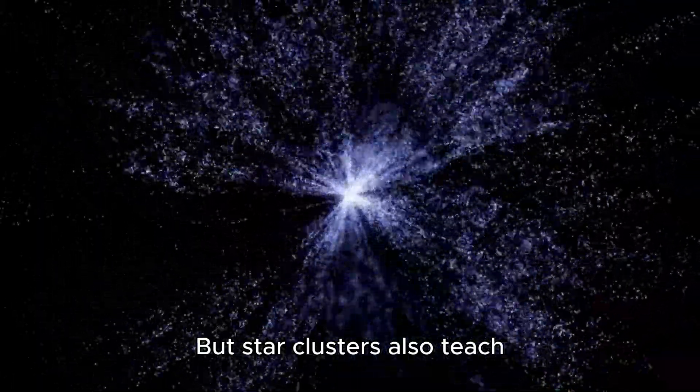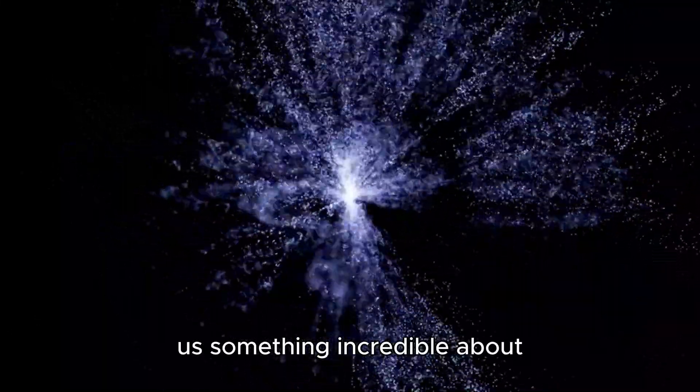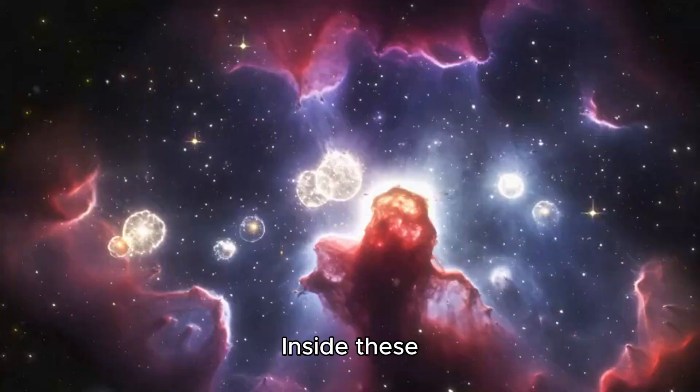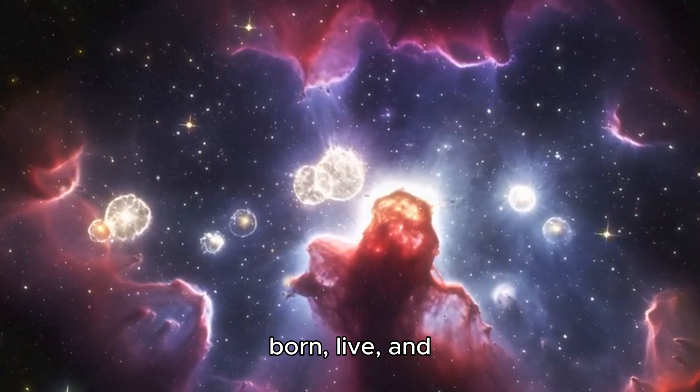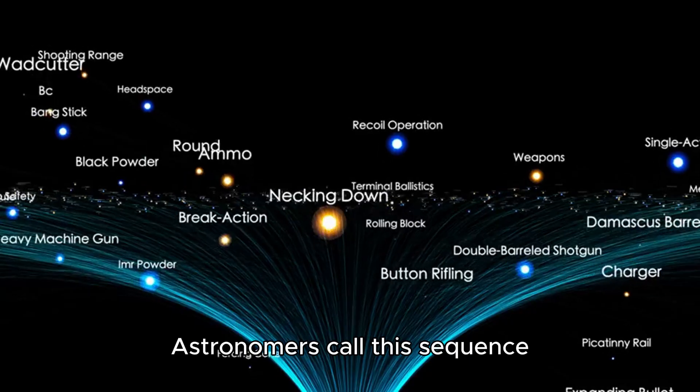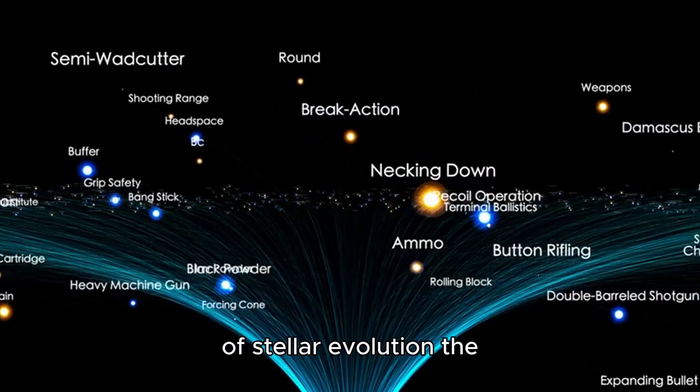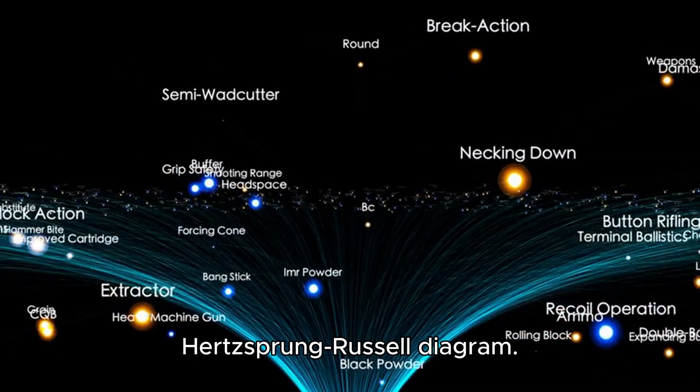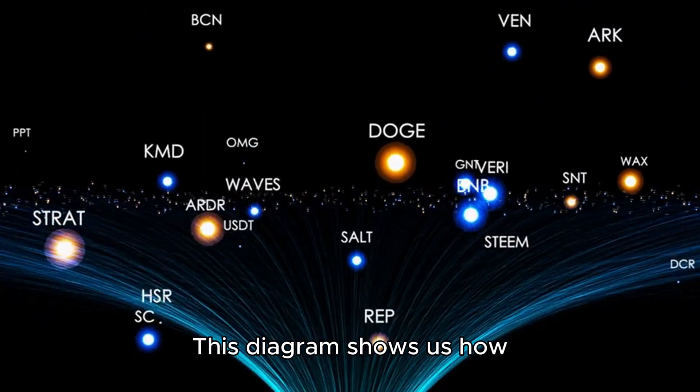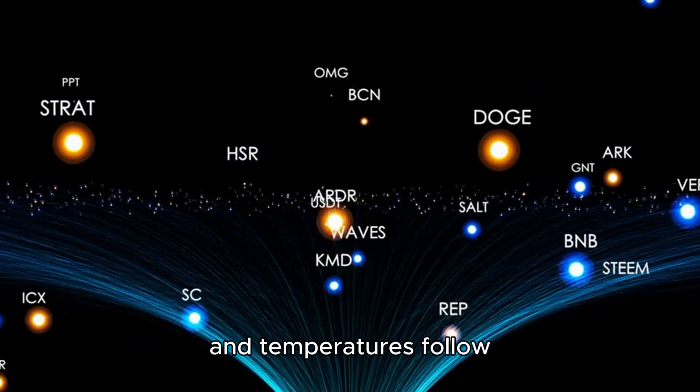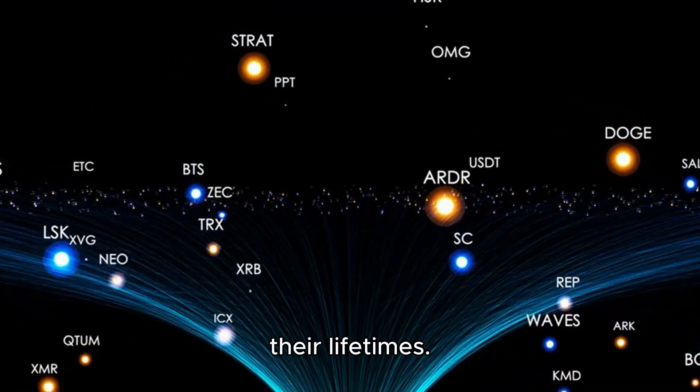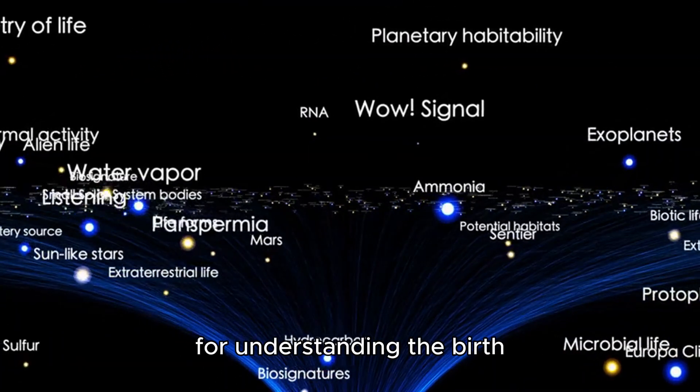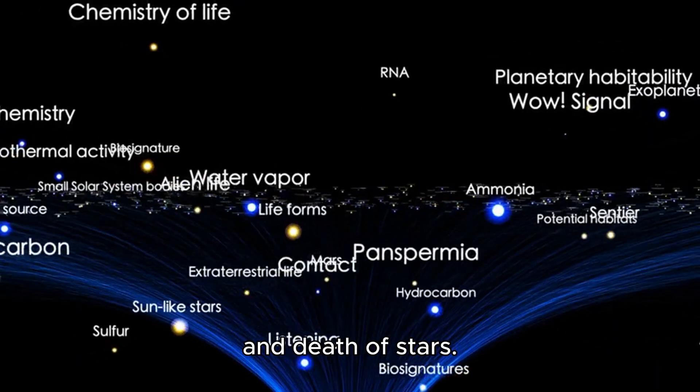But star clusters also teach us something incredible about the lifespan of stars. Inside these clusters, stars are born, live, and eventually die in cycles. Astronomers call this sequence of stellar evolution the Hertzsprung-Russell diagram. This diagram shows us how stars of different sizes and temperatures follow specific paths during their lifetimes. It's like a cosmic roadmap for understanding the birth and death of stars.